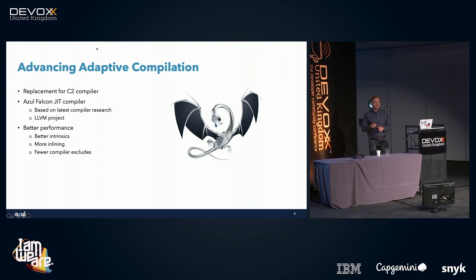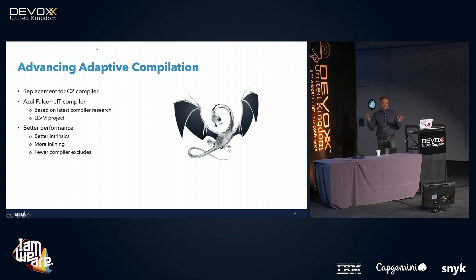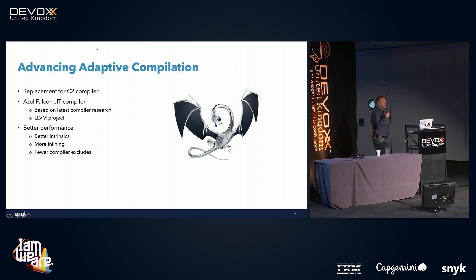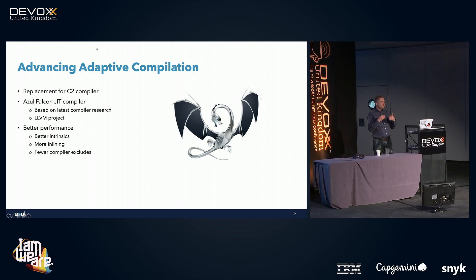The second thing we did is replace the Falcon JIT compiler for C2. This is based on the LLVM open source project — a very powerful piece of compiler technology with contributions from Intel, NVIDIA, Microsoft, and others. This allows us to generate better-performing code from the JIT compiler and achieve higher throughput, including better intrinsics, more inlining of code, and better use of vector operations — wide registers with single instruction, multiple data.